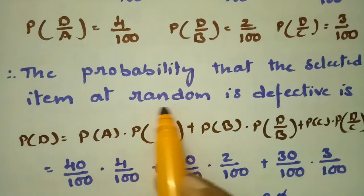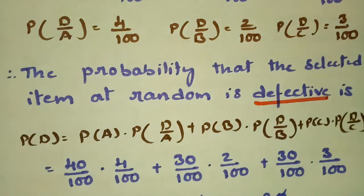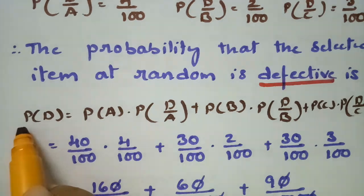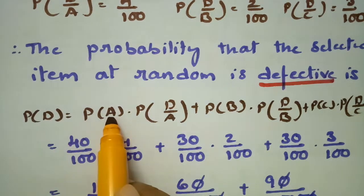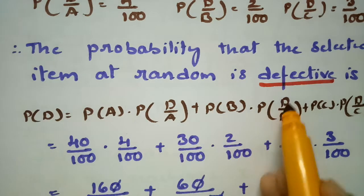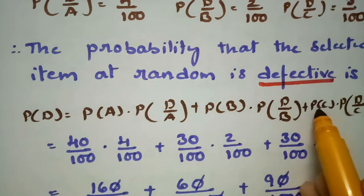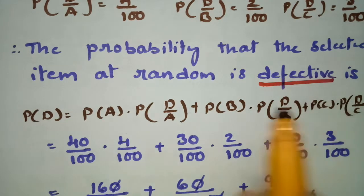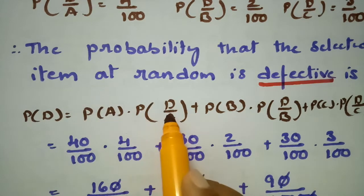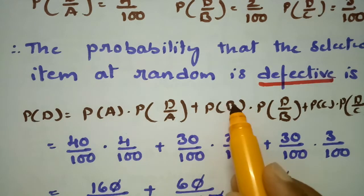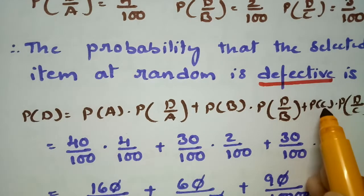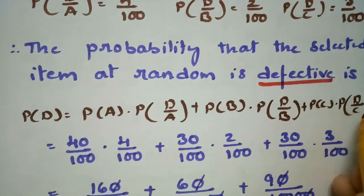The probability that the selected item at random is defective is: if you randomly select an item, it should be a defective one. So P(D) = P(A) × P(D|A) + P(B) × P(D|B) + P(C) × P(D|C). This accounts for all items produced by each machine and the defective items from each respective machine.